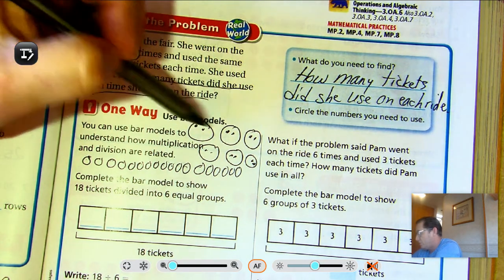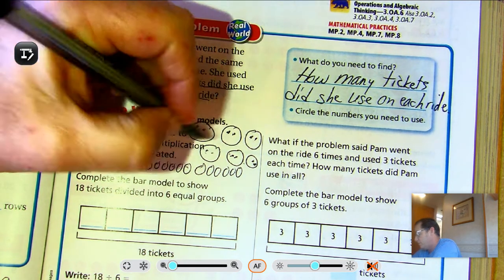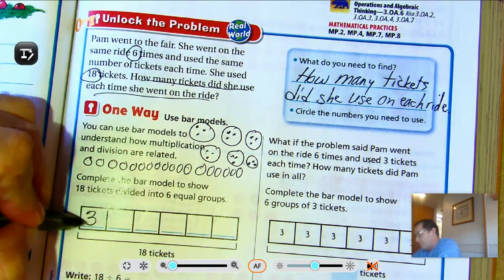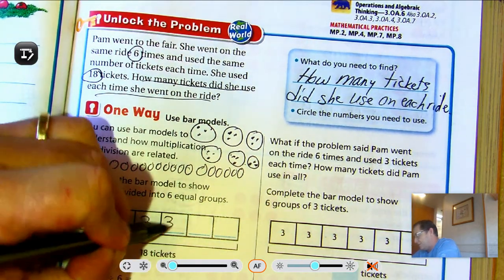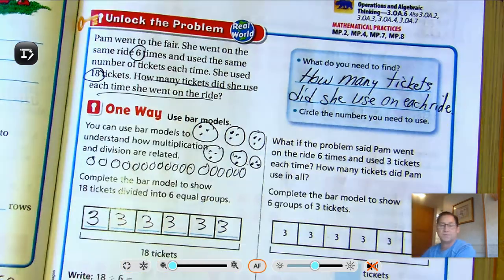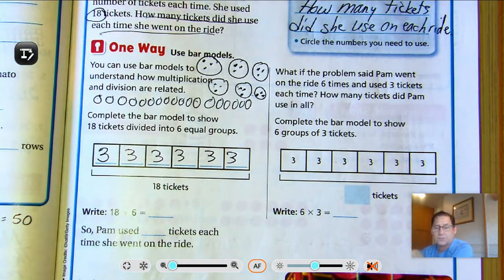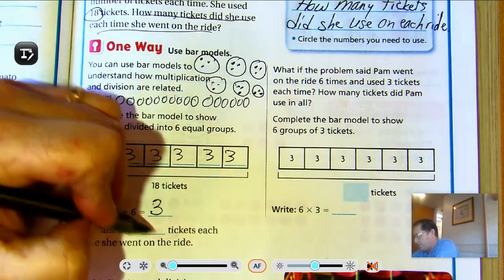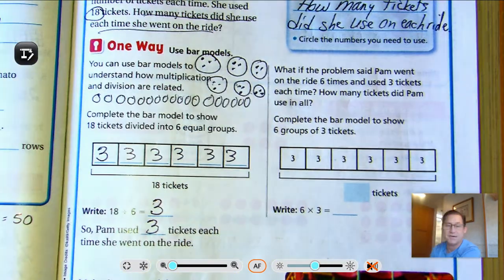So one, two, three, four, five, six. Let's share each one of the counters until we can't share any more. So that's, right now we have 12, then 13, 14, 15, 16, 17, 18. So it looks like we have three in each group.